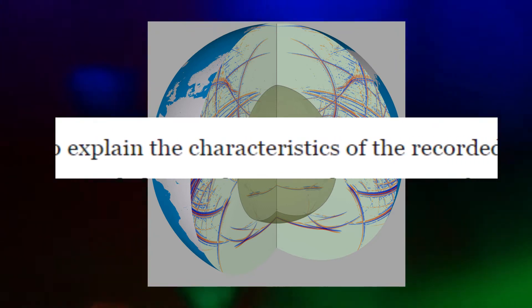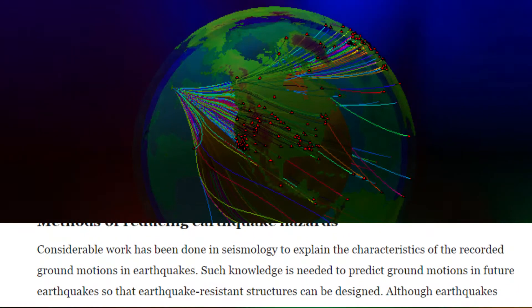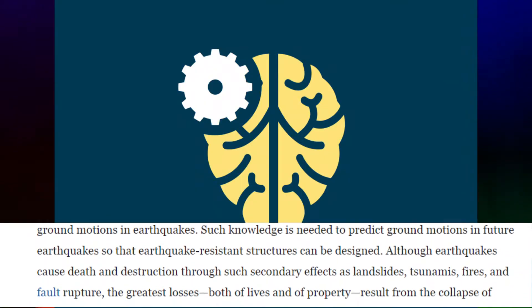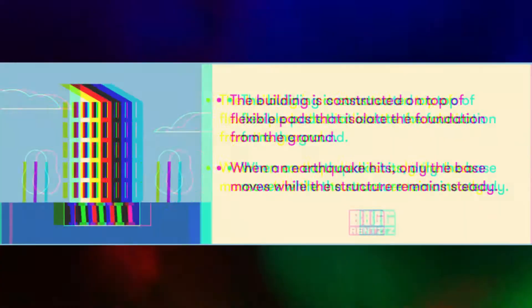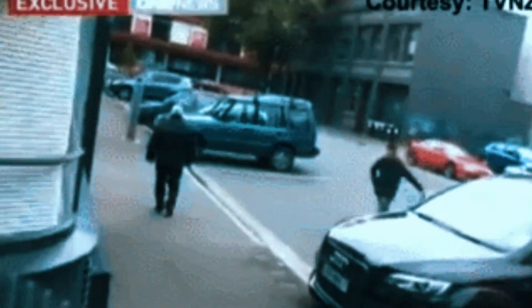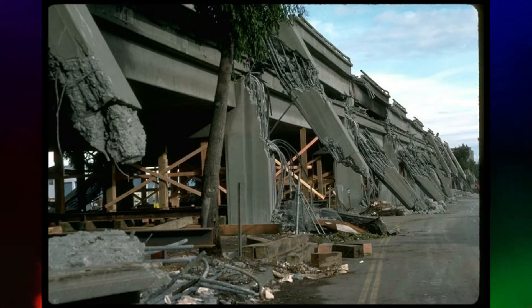Methods of reducing earthquake hazards: Considerable work has been done in seismology to explain the characteristics of recorded ground motions in earthquakes. Such knowledge is needed to predict ground motions in future earthquakes so that earthquake-resistant structures can be designed. Although earthquakes cause death and destruction, the greatest losses — both of lives and of property — result from the collapse of man-made structures. The most effective way to mitigate earthquake damage is to design and construct structures capable of withstanding strong ground motions.